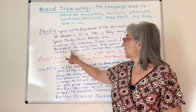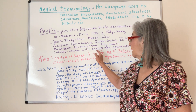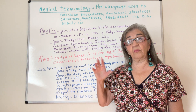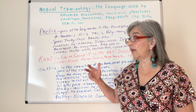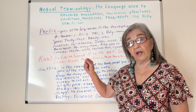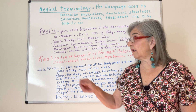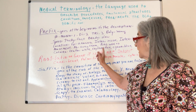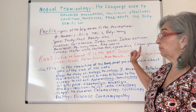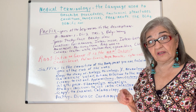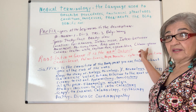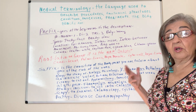Prefixes also describe colors. 'Leuco' means white — like leukocytes, white blood cells. 'Erythro' means red — like erythrocytes, red cells. 'Cyano' means blue, like cyanide, pertaining to the color blue. And 'chloro' means green, like chlorophyll.